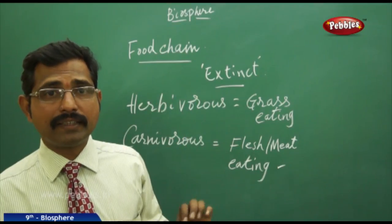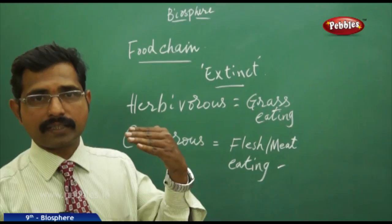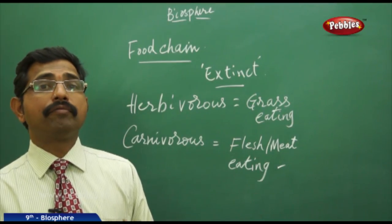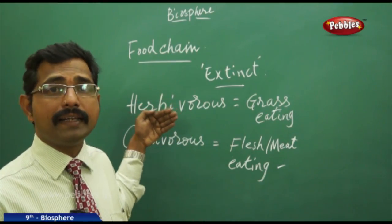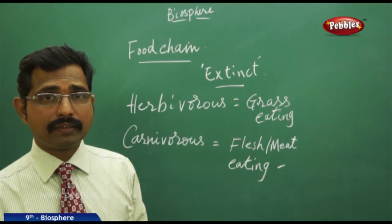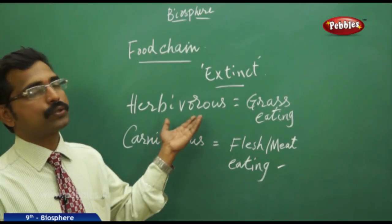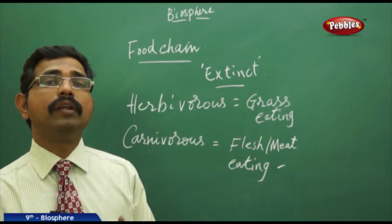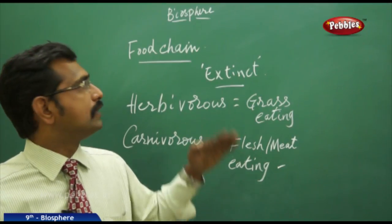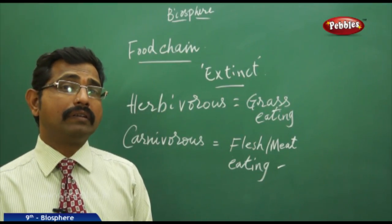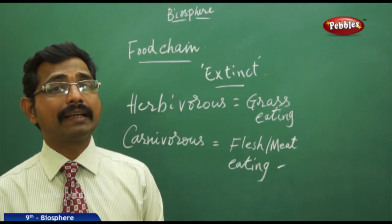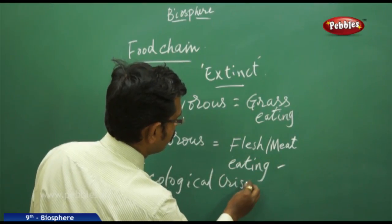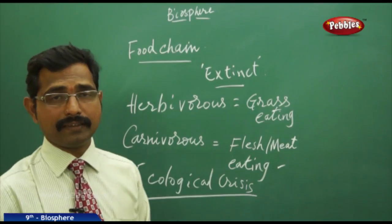Likewise, if animals go extinct, the process of the food chain also gets disturbed. The other disturbing agent is pollution. If we pollute the other three layers — land, hydrosphere, lithosphere, and atmosphere — then life will also be indirectly affected; the life cycle will be disrupted. Pollution or effluents also cause disturbance to the normal food chain and our normal environment. This kind of disturbance is called ecological crisis.